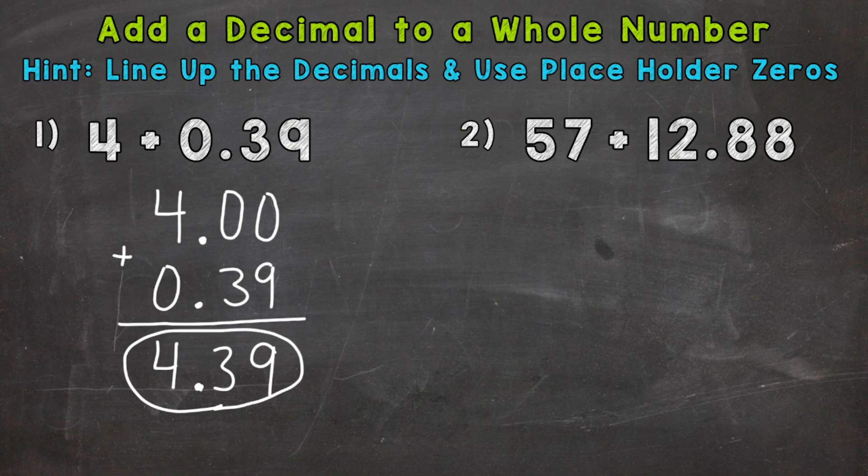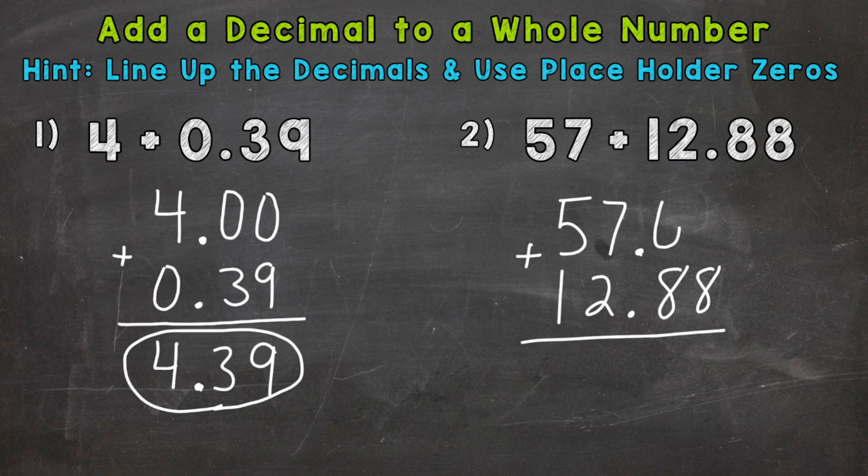On to number two. So the first thing we do is set this problem up and line up our decimals. So remember the decimal comes after any whole number. Now we can line up 12 and 88 hundredths. We can put our placeholder zeros in. That way, both numbers go to the hundredths and we're all set up.